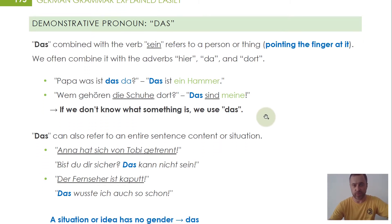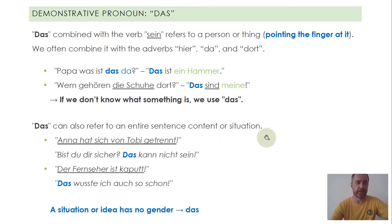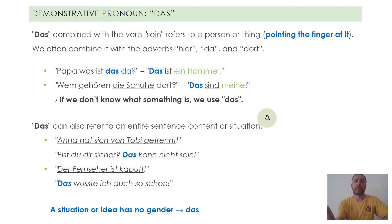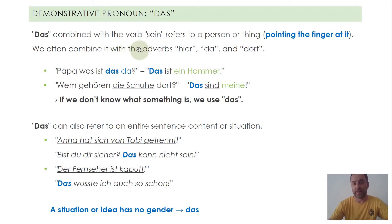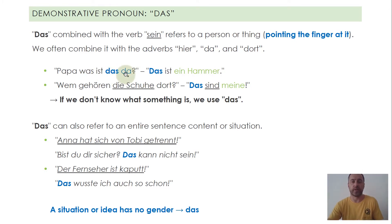There's also a special pronoun: das, because das can be combined with the verb 'sein.' If we want to refer to a person or a thing — simply pointing with a finger at something — we usually combine das with the local adverbs 'da' and 'dort.' For example: 'Papa, was ist das da?' — Daddy, what is this over there? 'Das ist ein Hammer.' — This is a hammer. Here we have the demonstrative pronoun das in combination with 'da.'